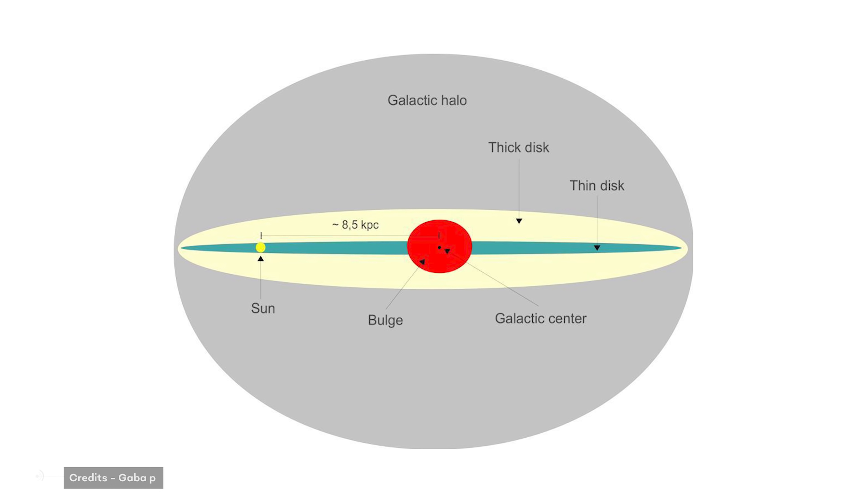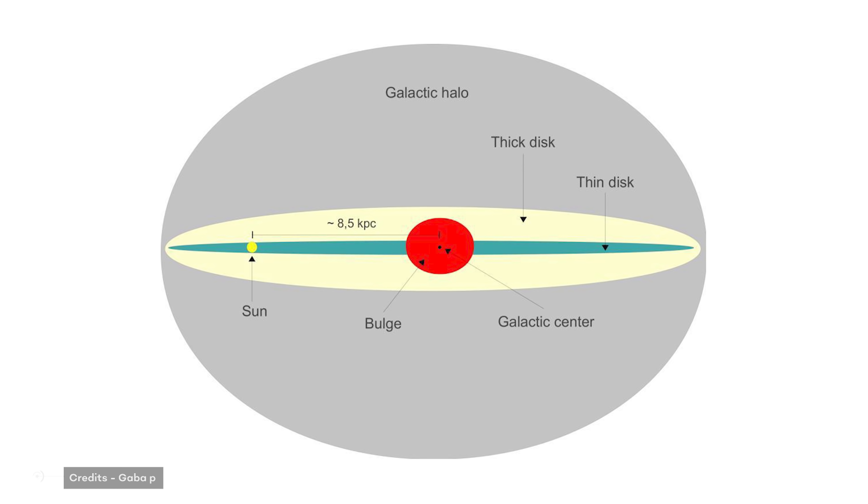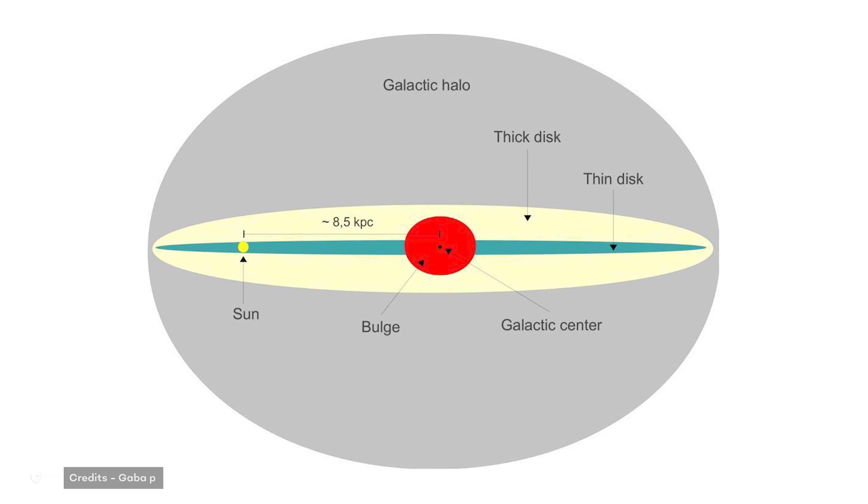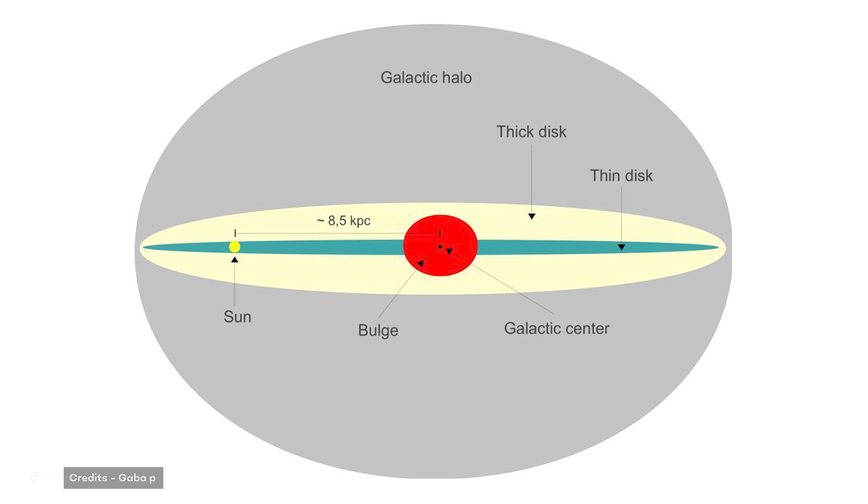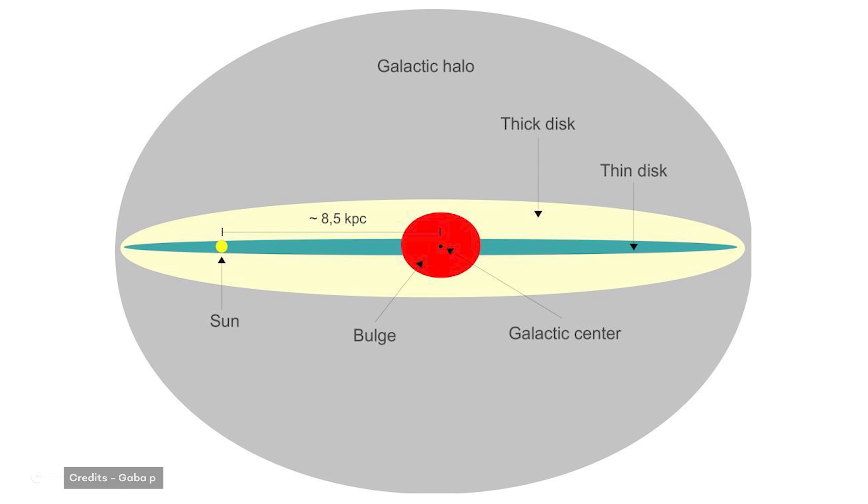The thinnest component, often called the thin disc, includes the dust and gas and the youngest stars, while a thicker component, the thick disc, includes somewhat older stars.